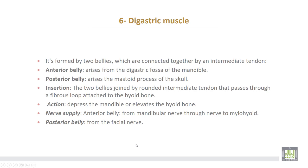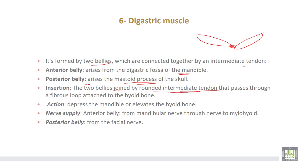The sixth muscle is the digastric muscle, which is formed by two bellies connected together with an intermediate tendon. The anterior belly arises from the digastric fossa of the mandible, while the posterior belly arises from the mastoid process of the skull. Both are connected by a rounded intermediate tendon that passes through a fibrous loop attached to the hyoid bone. The action of the digastric muscle is to depress the mandible or elevate the hyoid bone. The nerve supply for the anterior belly comes from the mandibular nerve through the nerve to mylohyoid, while the posterior belly is supplied by the facial nerve.